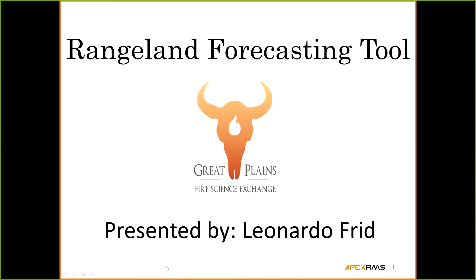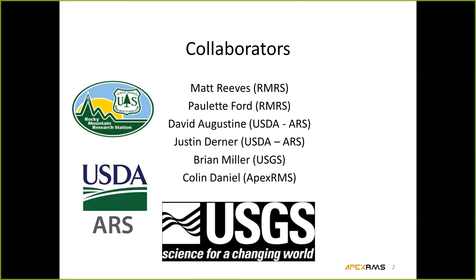Thanks Lori. I'm going to be speaking today about a tool we've developed for forecasting vegetation change on rangelands. Before I dive into the details, I'd like to acknowledge collaborators who've been working on this project over the past few years: Matt Reeves from Rocky Mountain Research Station, Paulette Ford, David Augustine, and Justin Derner from the Agricultural Research Service, Brian Miller from the US Geological Survey, and Colin Daniel, who also works with me at Apex.